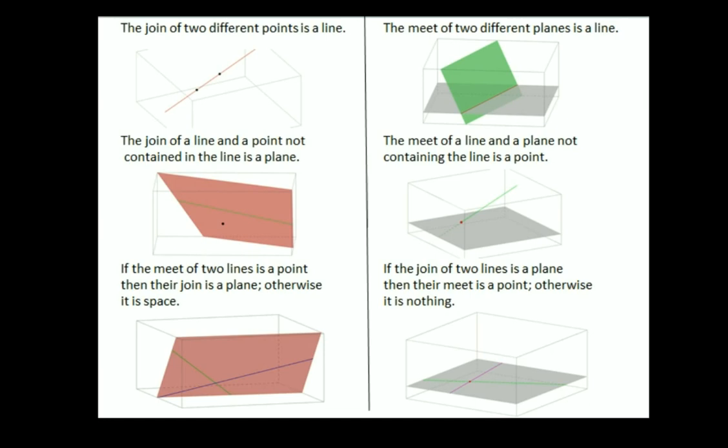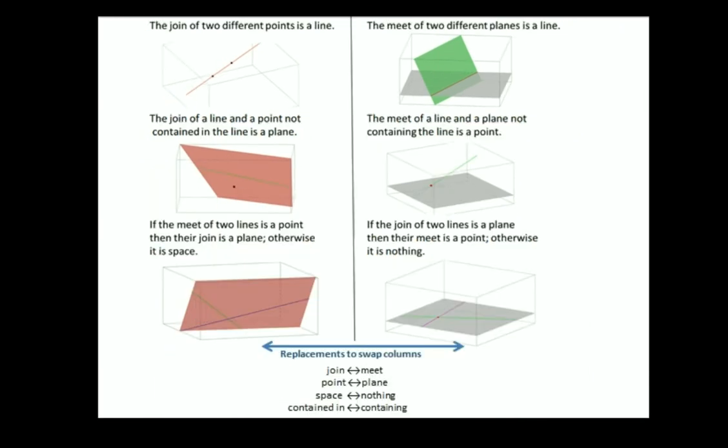So, how are these different statements on either side of this dividing line related? Well, if you look at it for a while, you should notice that if you replace certain words or phrases, in particular, if you replace the word join with the word meet, point with plane, space with nothing, and the phrase contained in with the phrase containing, then you essentially go from the statements on the left hand column to the statements on the right hand column or vice versa.